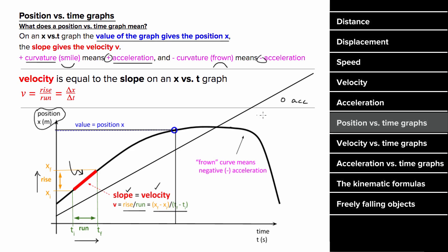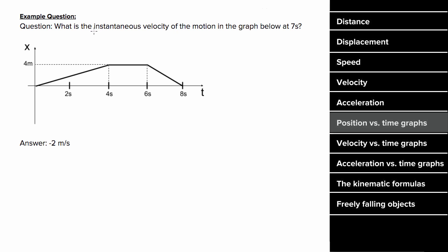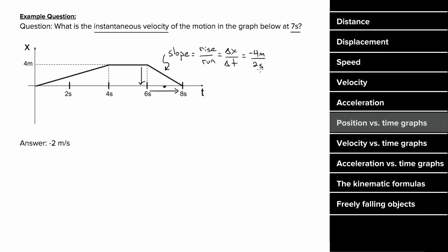What would an example problem with position versus time graphs look like? Say we have this graph and want to determine the instantaneous velocity at seven seconds. We locate seven seconds and find the slope in that region. Since the slope is constant, we choose six seconds and eight seconds as convenient points. Rise over run: the graph drops by four meters between six and eight seconds, so the displacement is negative four meters, and the time is two seconds. The slope is negative two meters per second, which also equals the velocity in this region.